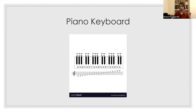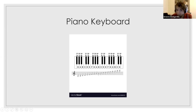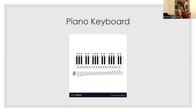A whole step is when you skip a key. For instance, C to D is a whole step because there's a black key in between. D to E is another whole step. Now, there's no black key between E and F, so you have to skip the F and go to F-sharp — the whole step is E to F-sharp.